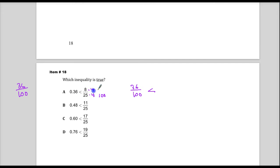So if I just multiply eight times four, I've got a nice little comparison. So 36 over a hundred is less than 32 over a hundred. No.